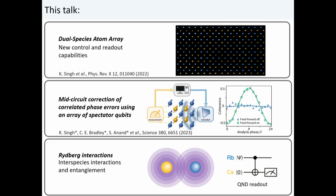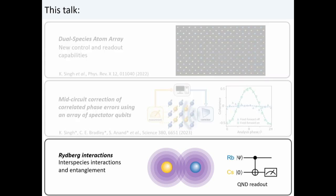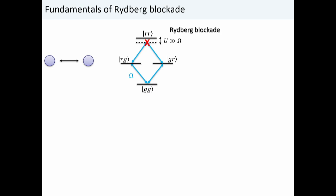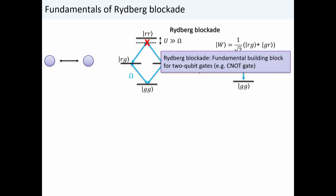Now I want to talk about generating interactions in this array. The way we generate interactions in neutral atom platforms is using a phenomenon known as the Rydberg blockade. Imagine you have two atoms close to each other, and you try to promote both to a Rydberg state. The interactions between them can be so strong that they shift the pair state out of resonance with the lasers, so you share a single Rydberg excitation among the two — this naturally creates an entangled state. The Rydberg blockade is the fundamental building block for generating two-qubit gates. People from all around the world have now used this to generate entangling operations with fidelities greater than 99%.